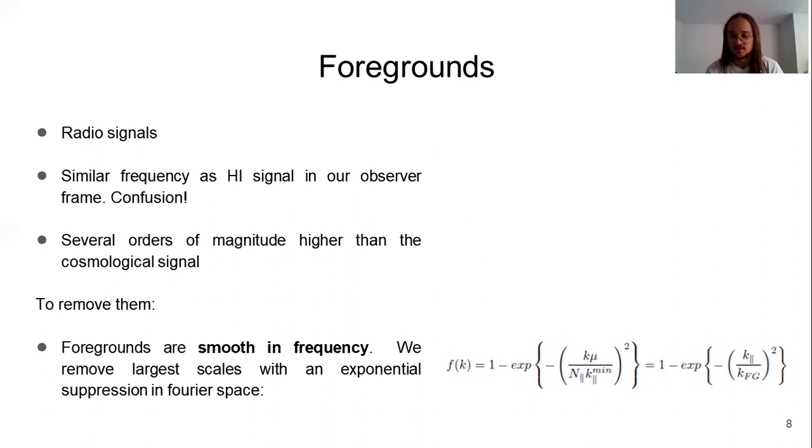And some techniques use the fact that they emit a spectrum smooth in frequency. The cosmological H1 signal instead has a fluctuating component. Then what we do is to remove the largest scales with an exponential suppression in Fourier space. The parameter that we have seen here, KFG, decides a bit at which minimum scale we start to cut.